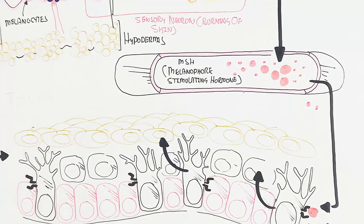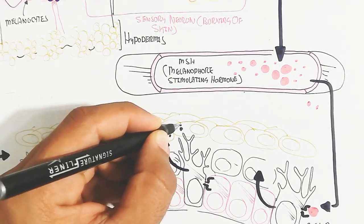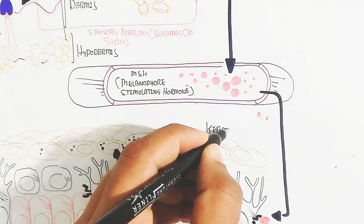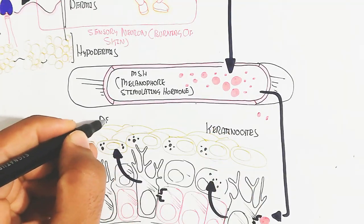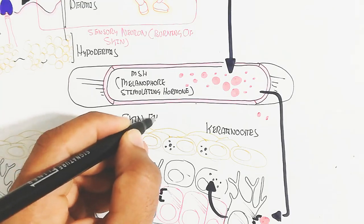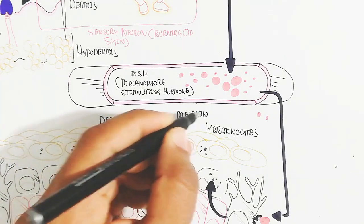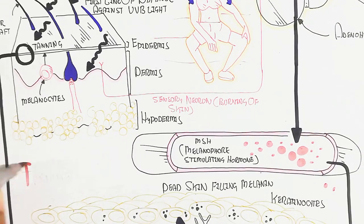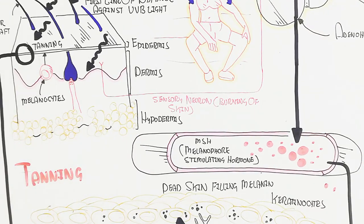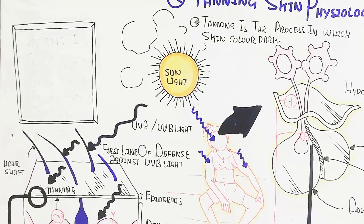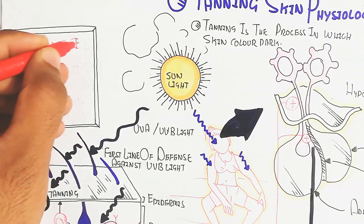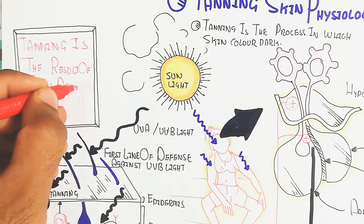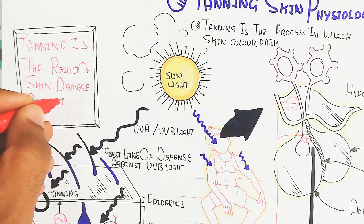The degranulation of melanin vesicles deposits melanin into the keratinocytes to form mature keratin. The dead skin cells — mature keratinocytes filled with melanin — form a protective layer against UV radiation. Tanning is therefore the result of a skin damage protection response.